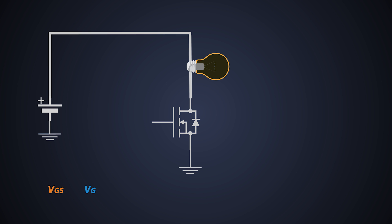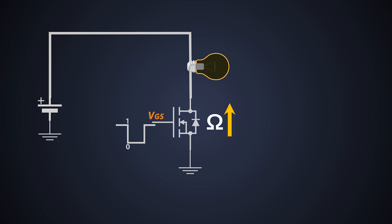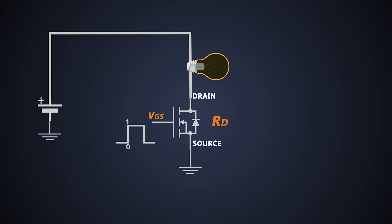The MOSFET gate needs a sufficient amount of gate voltage; if the signal is not high enough, the MOSFET doesn't turn ON. Since MOSFET is a voltage-controlled device, its resistance depends on the gate-source voltage, VGS. If there is no VGS, the MOSFET resistance is very high and it acts as an open switch. As soon as we provide VGS, this resistance decreases gradually until the MOSFET fully turns ON. We consider this resistance between drain and source as RDS, and when the MOSFET fully turns ON, this RDS value becomes constant, which we refer to as RDS(ON).